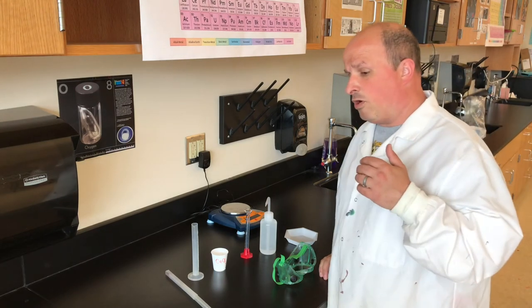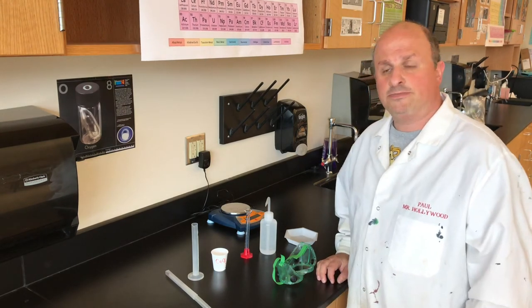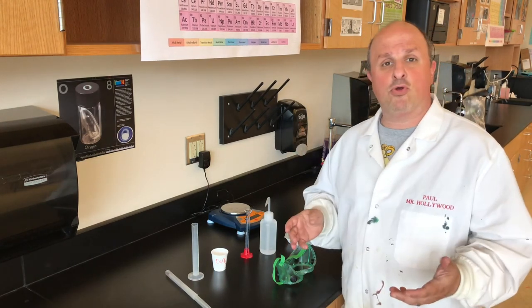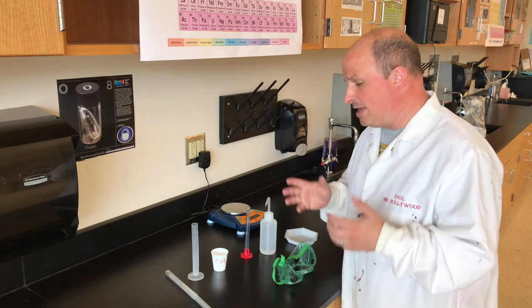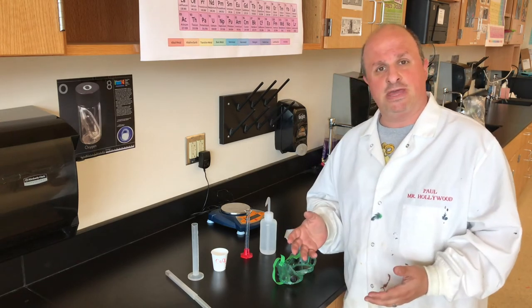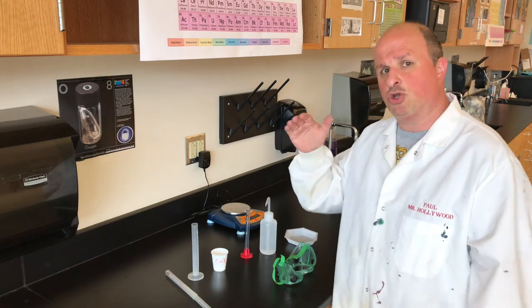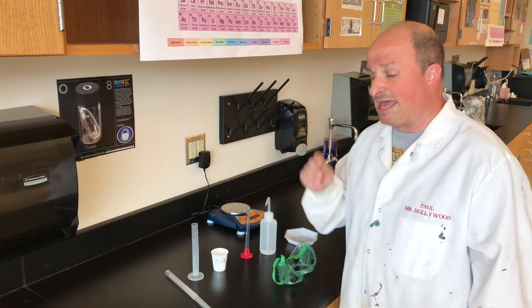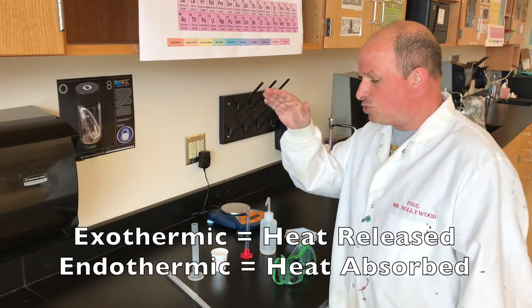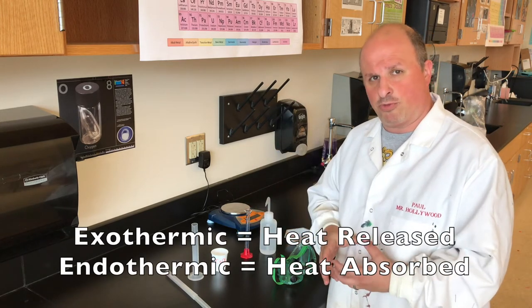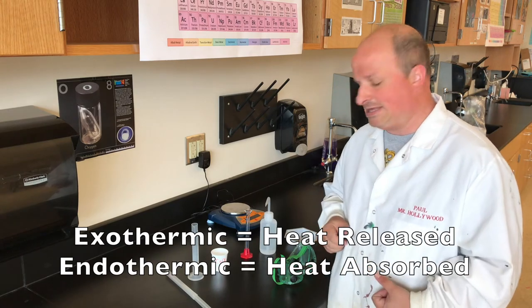All right guys, it is now time for our second lab of Lab-a-palooza. The sign of a chemical reaction that we're going to see with this lab is temperature change. In particular, we're going to see heat released, so we're going to see the temperature go up. That makes this an exothermic reaction. If the temperature went down, it would be an endothermic reaction because it's taking in heat.